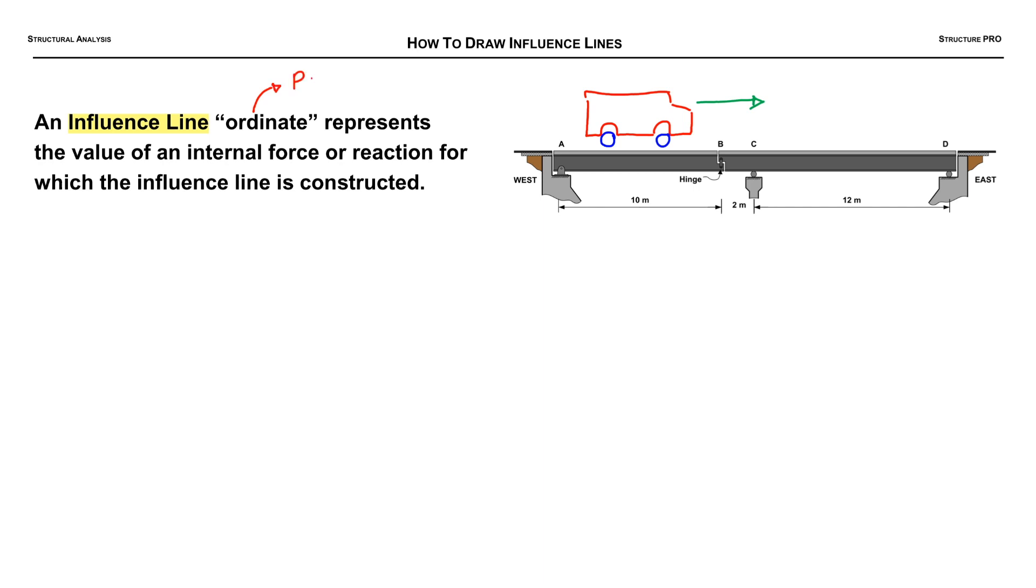And an influence line ordinate, which is just a fancy word for point, represents the value of an internal force or reaction for which the influence line is constructed.